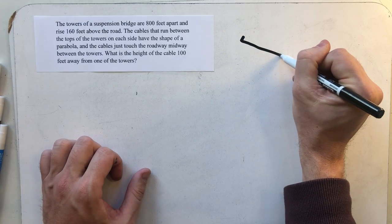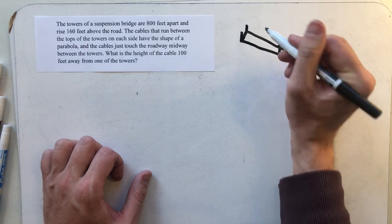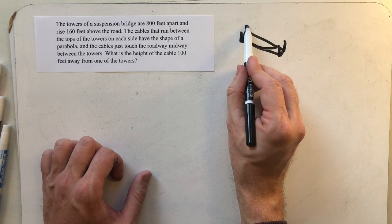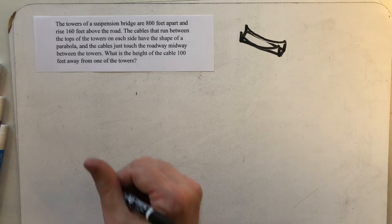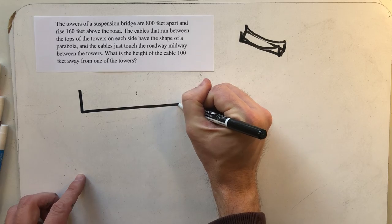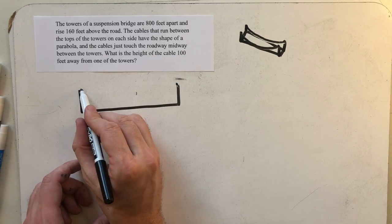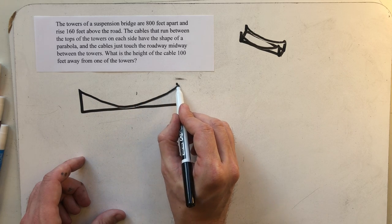I'm imagining a bridge with a road in the middle and that I'd have four towers, a pair on each side of the road, and then between those cables suspending the roadway. Apparently those cables are in the shape of a parabola. So if we just looked at one side of the road, I'd see the road and then my two towers and then the parabolic cable that hits the road right in the middle.